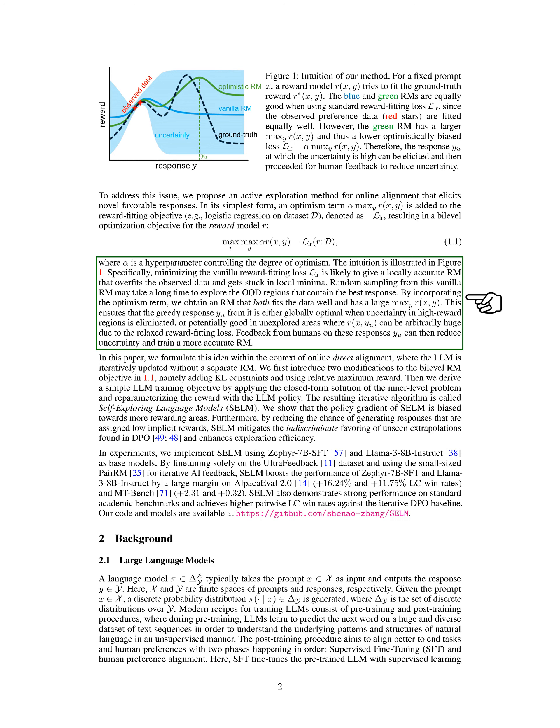To tackle this problem, we propose an active exploration method for online alignment to generate novel and favorable responses. Our proposed method adds an optimism term to the reward-fitting objective, creating a bi-level optimization objective for the reward model. By incorporating this optimism term, we aim to have a reward model that fits the data well while also exploring high-reward regions effectively.